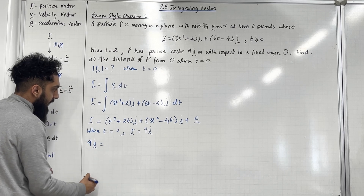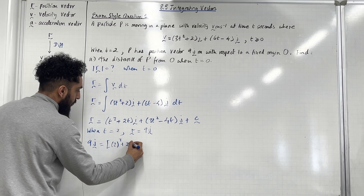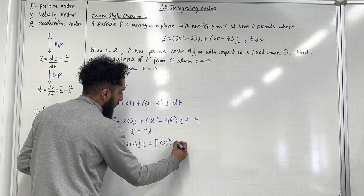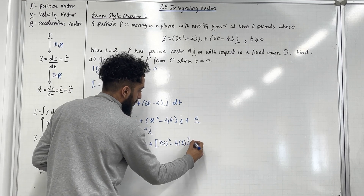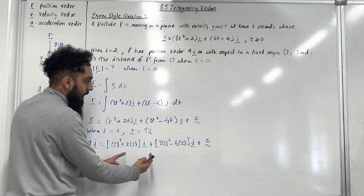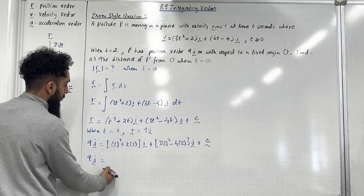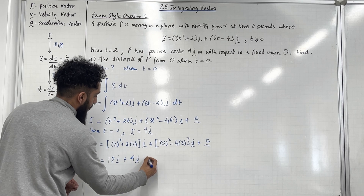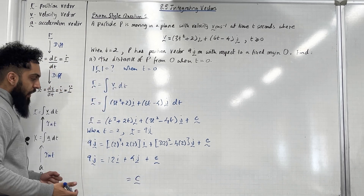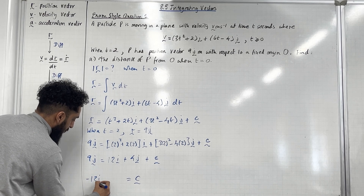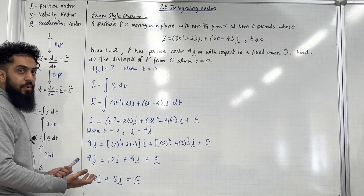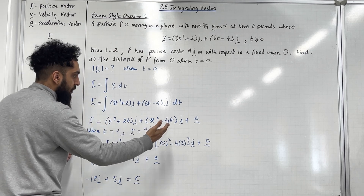Substituting in, we have 9J equals 2 cubed plus 2 times 2 in the I bracket, plus 3 multiplied by 2 squared minus 4 multiplied by 2 in the J bracket, plus C squiggle. Putting this into the calculator gives 12I plus 4J plus C squiggle. Taking the I and J terms to the left-hand side gives C squiggle equals minus 12I plus 5J.